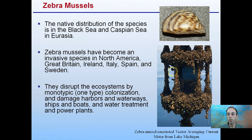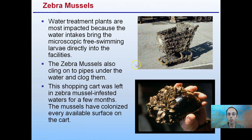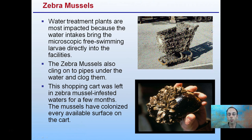You can see how they encrusted a buoy sitting in the water. Water treatment plants are most impacted because water intakes bring in microscopic free-swimming larvae directly into facilities. Zebra mussels can clog pipes, and because of their massive birth rate, they multiply so densely that water can't pass through. One image shows a shopping cart left in zebra mussel-infected waters for a few months — the mussels colonized every available surface on the cart.